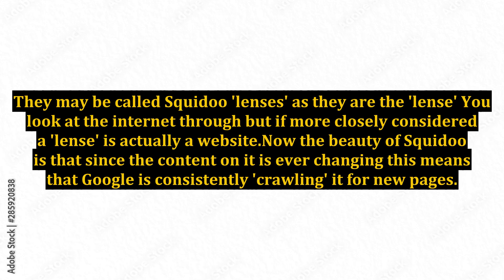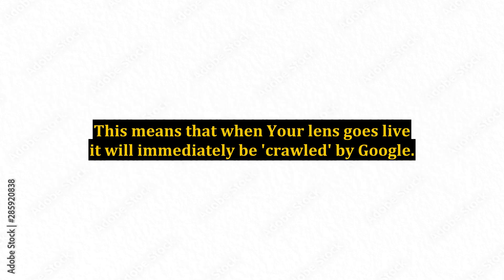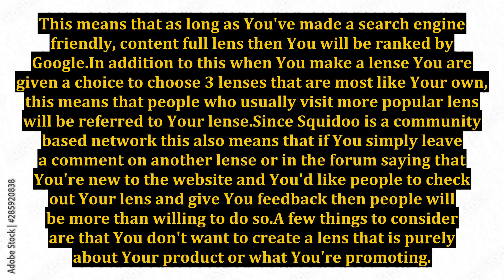They may be called Squidoo lenses, as they are the lens you look at the internet through, but more closely considered, a lens is actually a website. The beauty of Squidoo is that since the content on it is ever-changing, Google is consistently crawling it for new pages. This means that when your lens goes live it will immediately be crawled by Google, and as long as you've made a search engine-friendly, content-full lens, you will be ranked by Google.